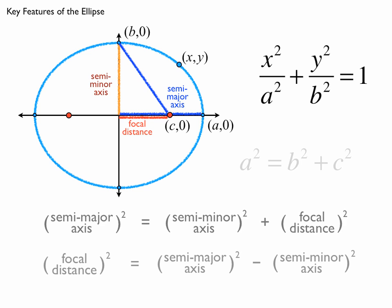I actually prefer a different version of this, where I get the focal distance on one side, and then I have a difference of semi-major, semi-minor axis squared on the other. I just prefer that one.